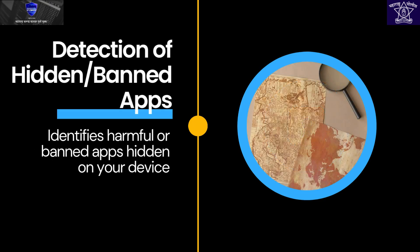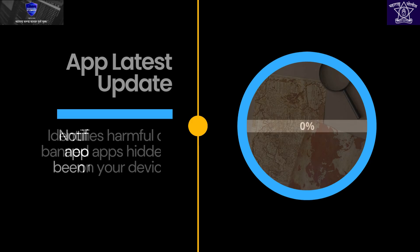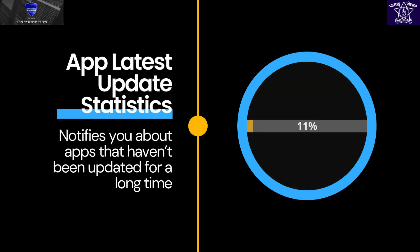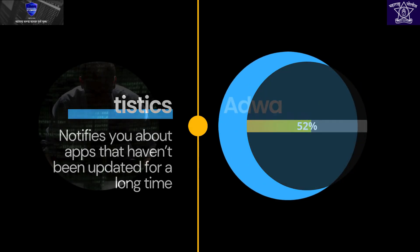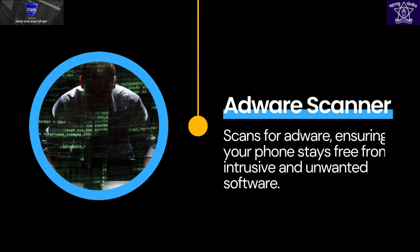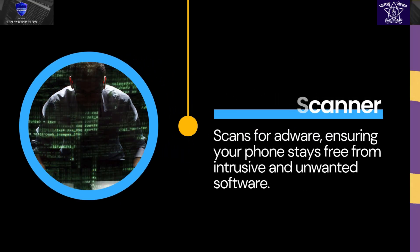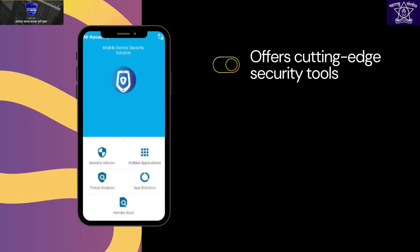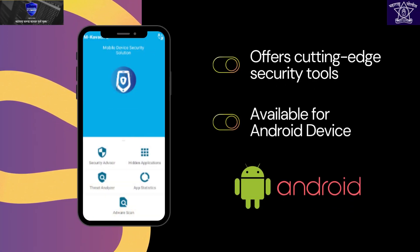Detection of Hidden Banned Apps: identifies harmful or banned apps hidden on your device and analyzes them for security risks. App Latest Update Statistics: notifies you about apps that haven't been updated for a long time, helping you keep your apps secure and up-to-date. Adware Scanner: scans for adware, ensuring your phone stays free from intrusive and unwanted software. mKawaj2 offers cutting-edge security tools designed to keep your Android device safe and secure from all angles.